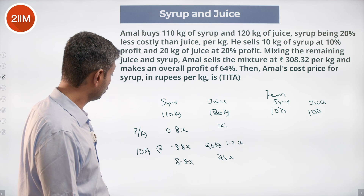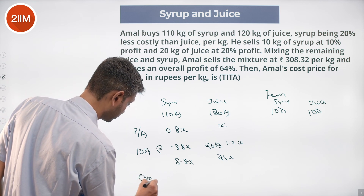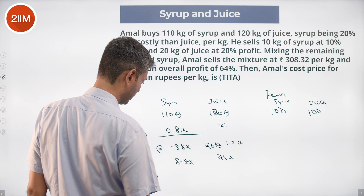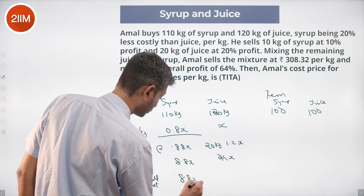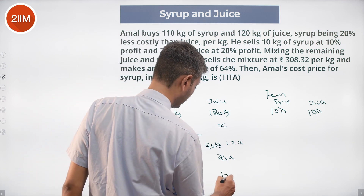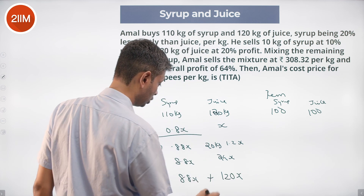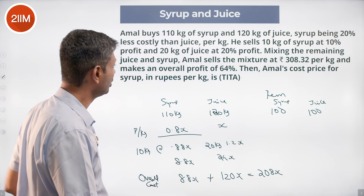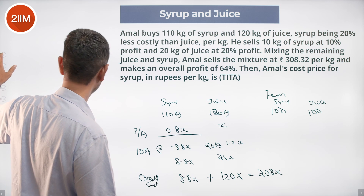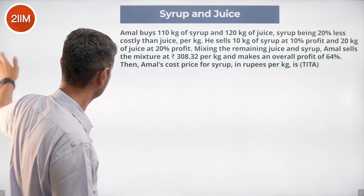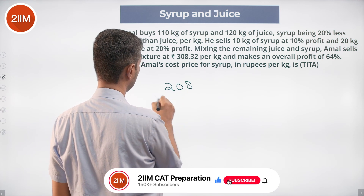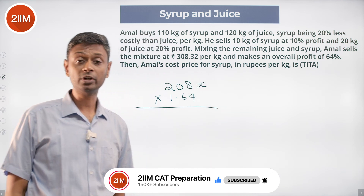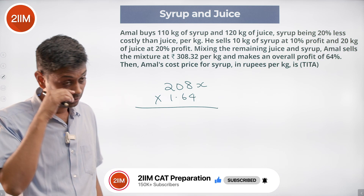Overall cost is 110 into 0.8X, which is 88X, plus 120 into X, which is 120X. This totals 208X overall cost. Overall profit is 64%, so cost price into 1.64 should equal the total selling price.